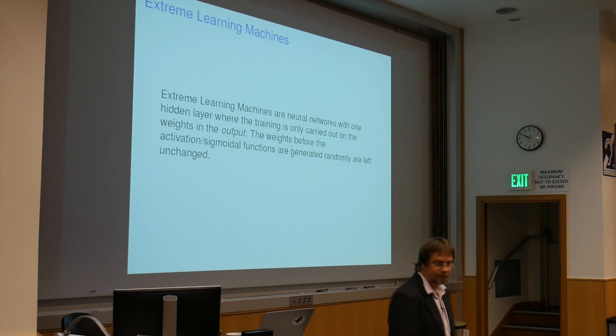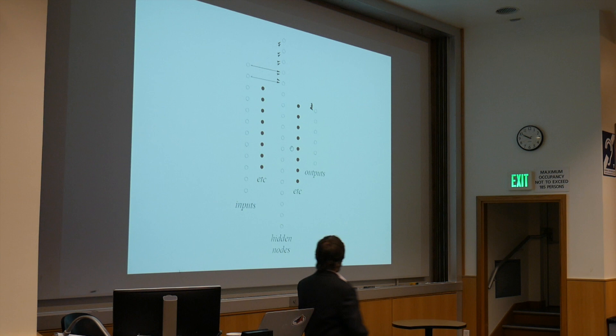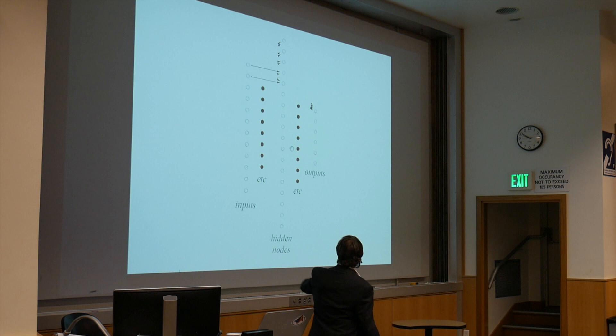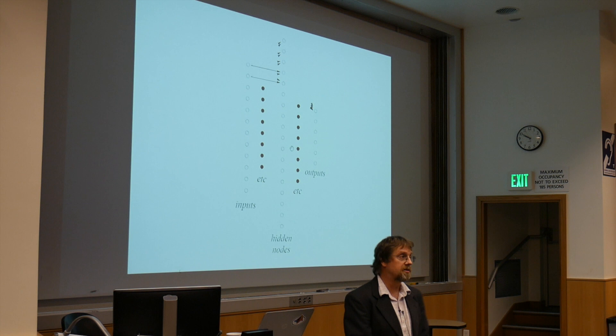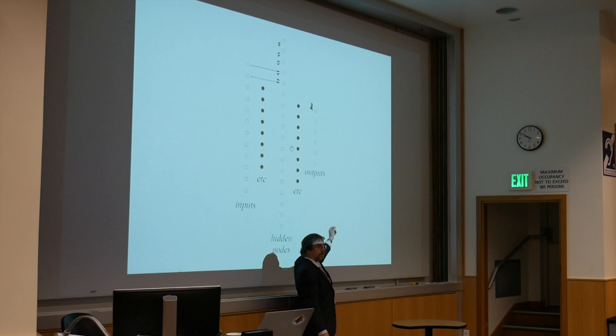As standard architecture, we have our inputs, our hidden nodes which have a weighted sum going along the arrows, and we have an activation function there, typically hyperbolic tangent or some other sigmoidal function. Then we have the weights to the outputs, and it's just training on these weights, leaving these alone.